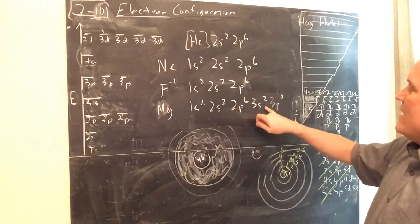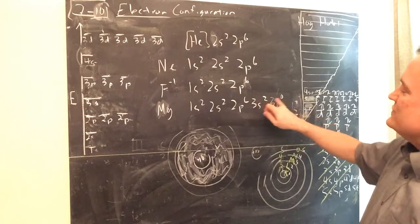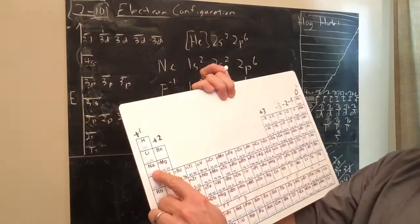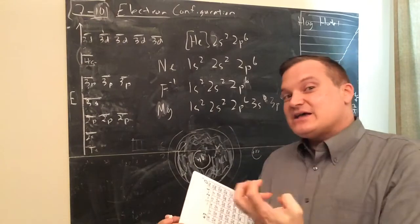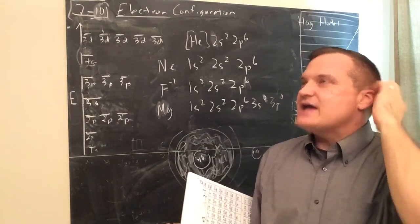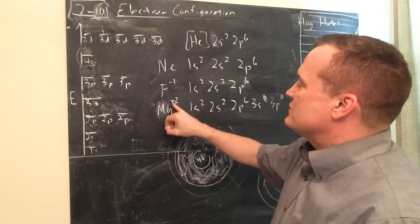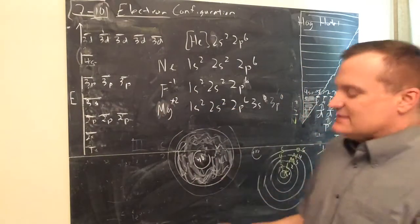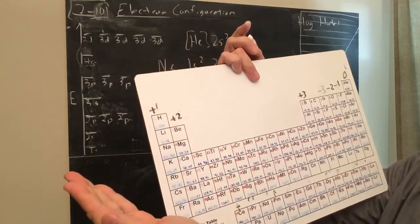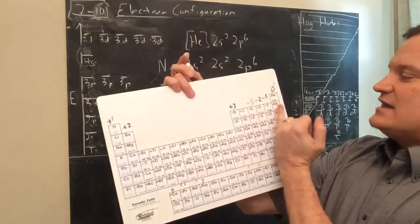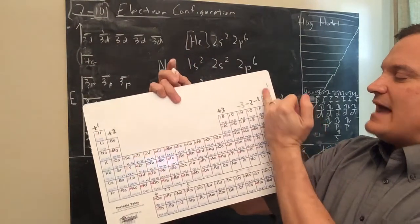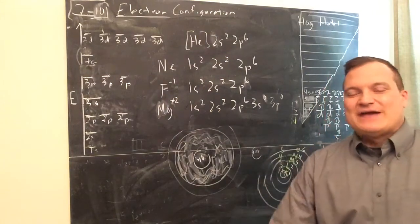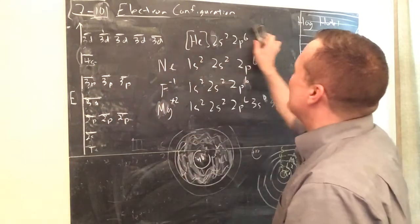If magnesium loses those two 3s electrons, it becomes just like neon — full all the way to the second shell. That's why magnesium forms a Mg²⁺ ion. The reason atoms have the charges you see is because they're either gaining or losing outer electrons in order to be isoelectronic with a noble gas — trying to get what's called a pseudo noble gas configuration.